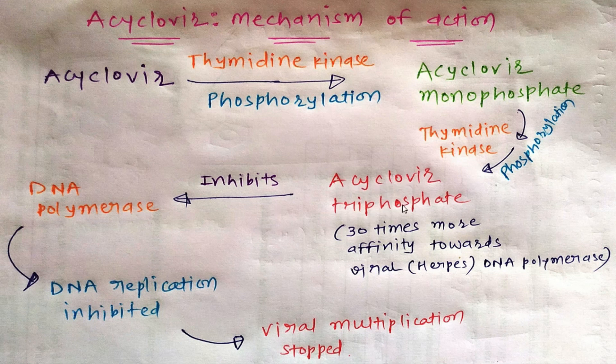Acyclovir triphosphate has 30 times more affinity towards viral DNA polymerase, specifically herpes DNA polymerase. Acyclovir triphosphate inhibits viral DNA polymerase, so that viral DNA replication is inhibited and viral multiplication is stopped. This is the mechanism of action of acyclovir.